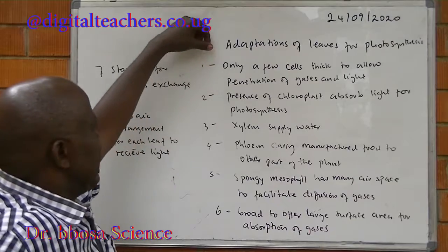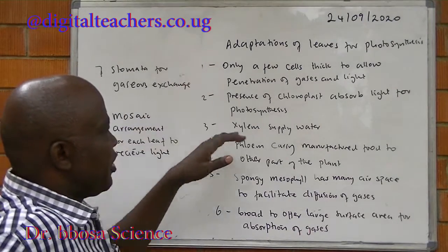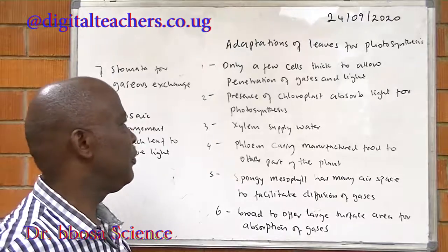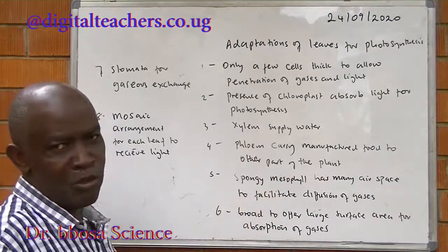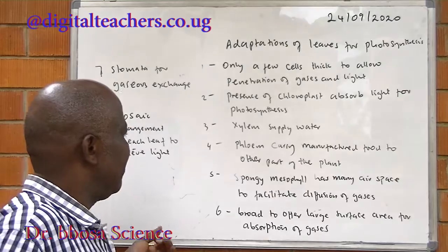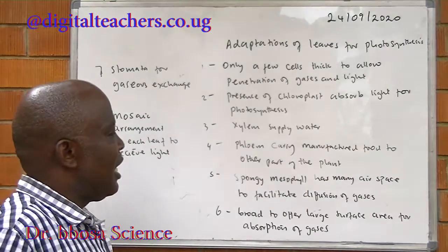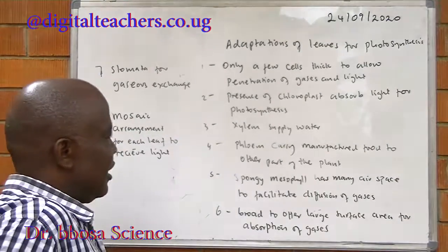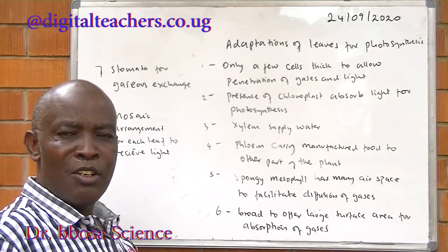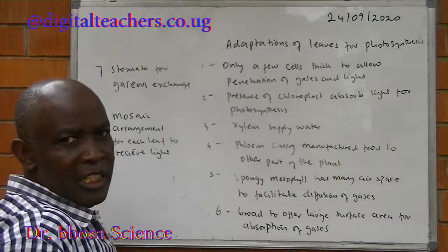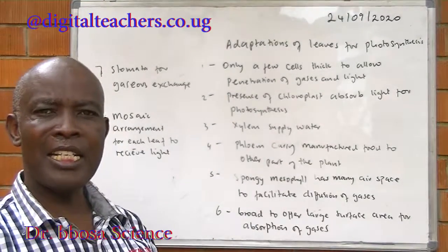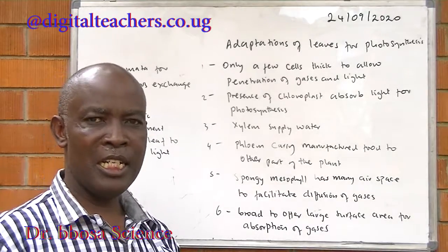Adaptations of leaves for photosynthesis: They have only a few cell layers thick to allow penetration of light. Presence of chloroplasts to absorb light for photosynthesis. Xylem vessels supply water, and phloem vessels carry away manufactured food to other parts of the plant. The spongy mesophyll has good air spaces to facilitate gaseous diffusion. Leaves are broad to provide a large surface area for absorption of light. They contain stomata for gaseous exchange. They are arranged in a mosaic manner on the plant so each leaf receives light.